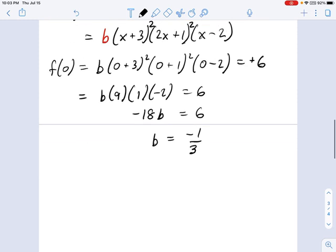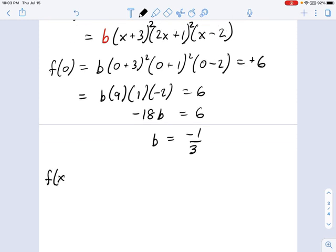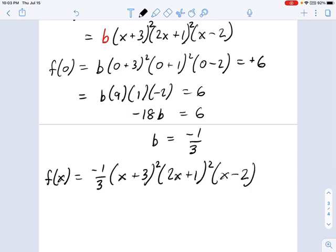So, now we're ready to write our full equation. And we're basically done. f(x) equals -1/3 times (x+3)² times (2x+1)² times (x-2). I think I'm done.